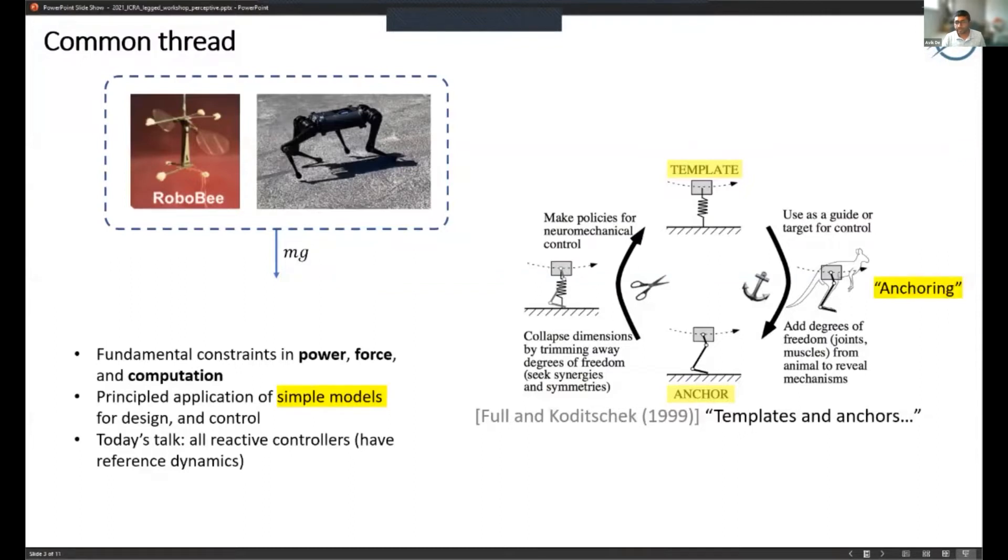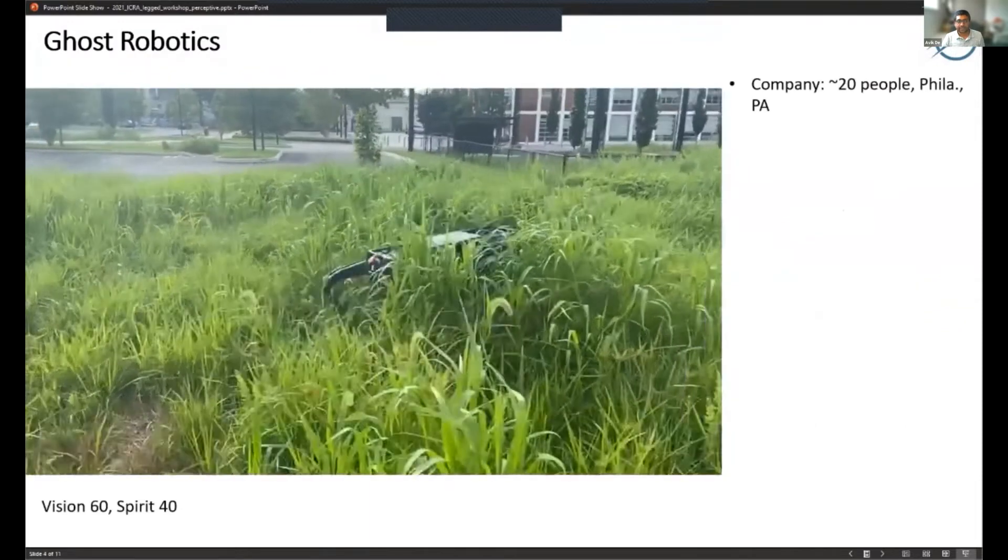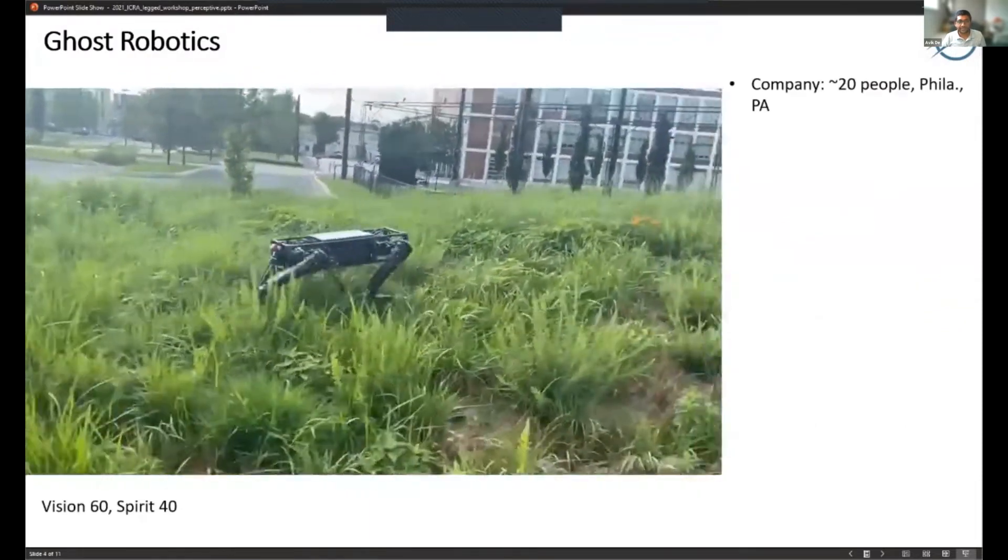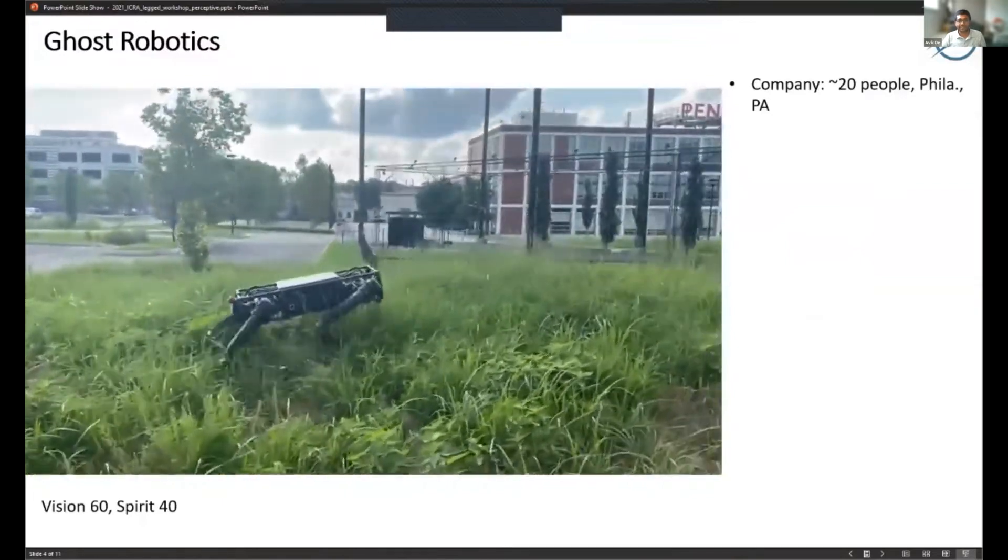I might also use the term anchoring, referring to the synthetic act of taking idealized simple reduced order models and somehow embedding those on the complicated robot. I'll talk now a little bit about Ghost Robotics. The company is in Philadelphia, Pennsylvania and we have about 20 people now.